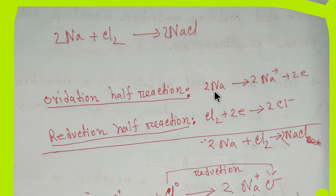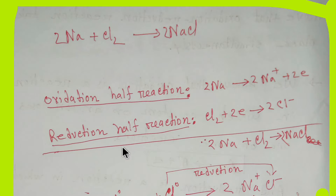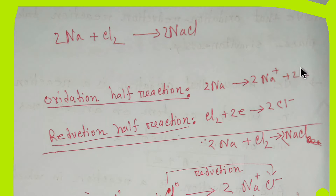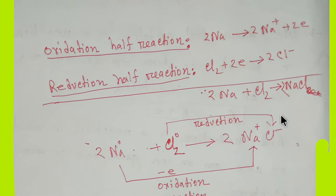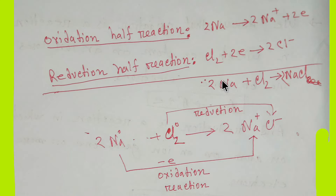So in the oxidation half-reaction, sodium is losing an electron — sodium is the reducing agent. After releasing the electron, sodium is oxidized, meaning the reducing agent is oxidized. In the reduction half-reaction, chlorine goes from zero to chloride, and two chlorine atoms take two electrons, so we get chloride ions. When you add the half-reactions, the electrons cancel out.